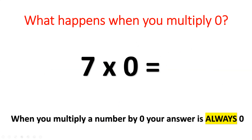What happens when you multiply zero? When you multiply a number by zero, the answer is always zero. So no matter the size of the number, when you multiply it by zero, your answer will always be zero. So if I multiply 1000 by zero, my product will be zero. If I have two factors like five and zero, the product or the answer will always be zero.